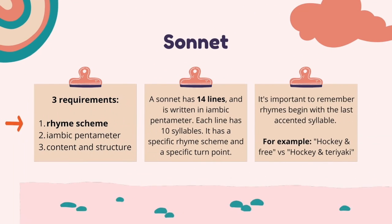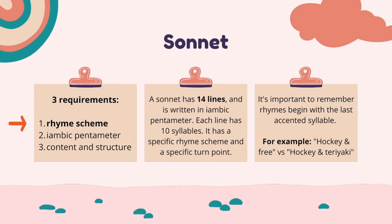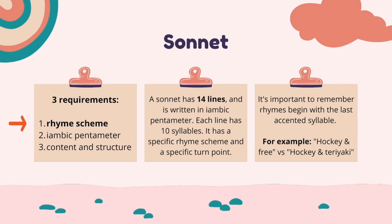First we're going to be talking about a sonnet. There are three requirements to writing a sonnet. First is the rhyme scheme. A sonnet has 14 lines and is written in iambic pentameter. Each line has 10 syllables. It has a specific rhyme scheme and a specific turn point. It's important to remember rhymes begin with the last accented syllable.